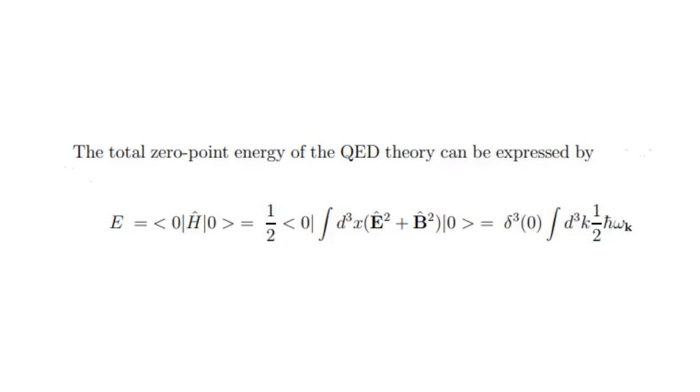The Planck energy is used as a cutoff energy in the calculation of the energy density in quantum electrodynamics. The ground state, the state with the lowest energy of the quantum harmonic oscillator, has a non-vanishing zero-point energy, which is half the oscillation frequency of the corresponding classical harmonic oscillator times Planck's constant.